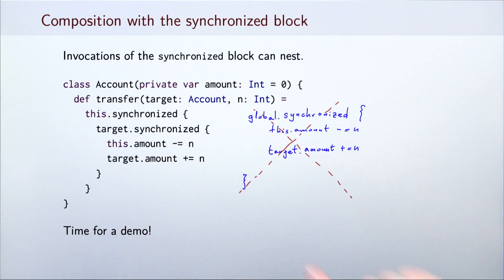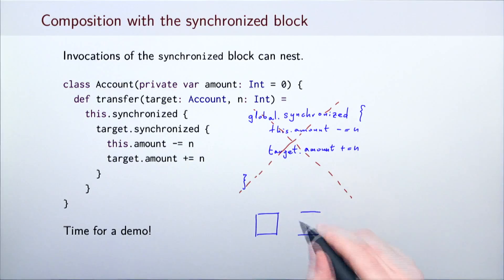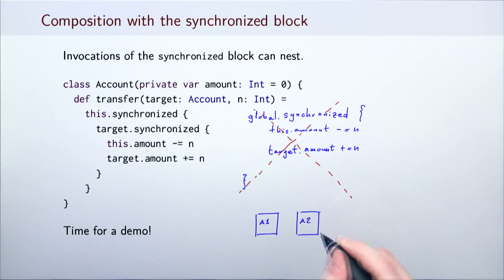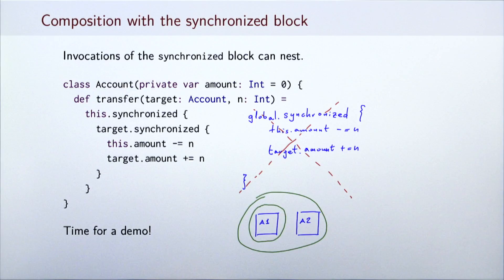This will make sure that the code in the nested block is executing atomically both for the threads using the source account, this, and the threads using the target account.